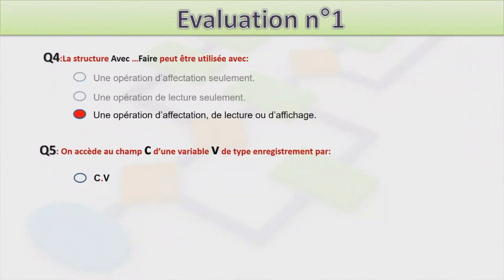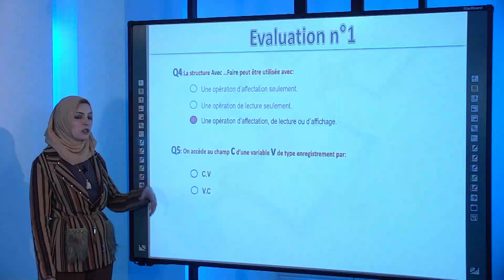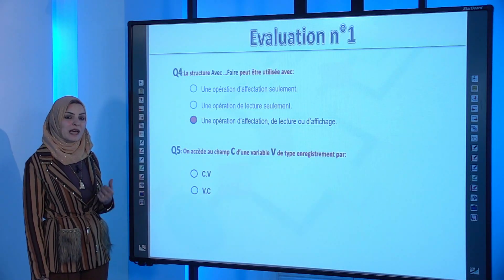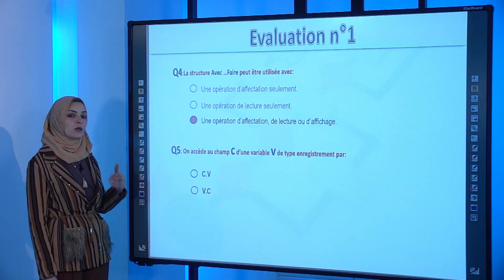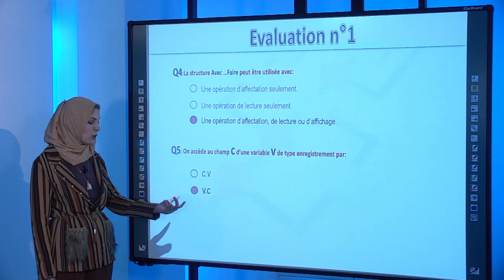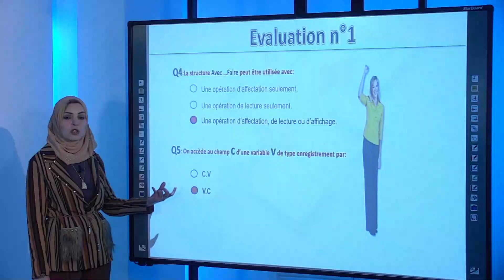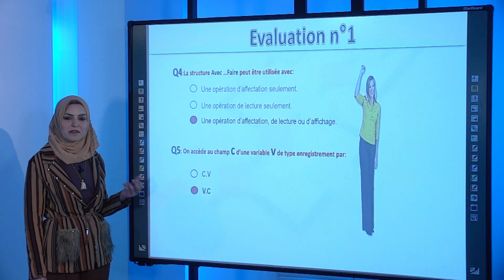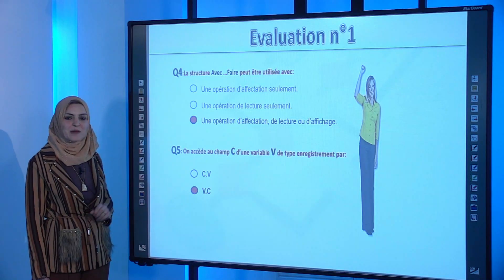Q5 : On accède au champ C d'une variable V de type enregistrement par V.C (et non C.V). La notation correcte est toujours NomVariable.NomChamp.